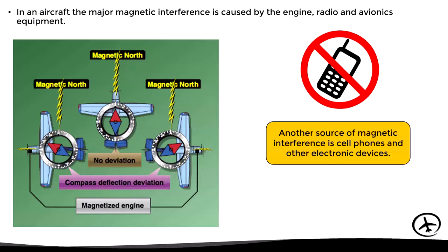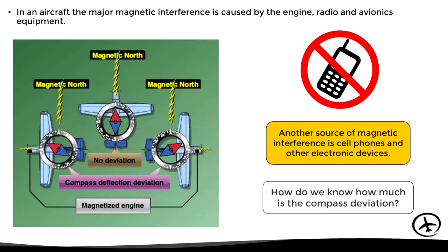There are other sources of magnetic interference that may be present, such as cell phones and other portable electronic devices. This is one of the reasons for restricting the use of these devices during flight.